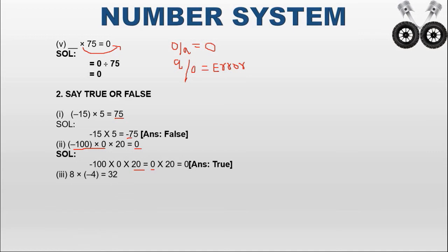The third statement: 8 into (4 minus 4) equals 32. We check: 8 into 4 equals 32, but one is positive and the other is negative — different signs — so the answer is minus 32. The given statement says 32 (positive), so the statement is wrong (false).